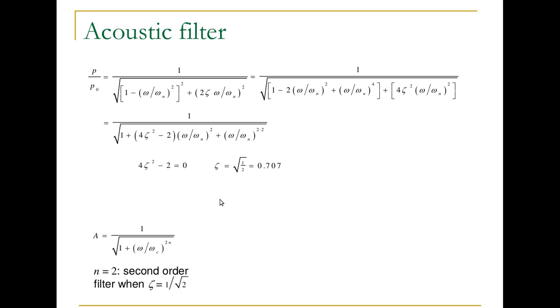And if we were to have values of zeta less than that, so lighter damping than 0.7, we would have this term minus this term, so it would act like a less than second-order filter. So that means that the attenuation would be less than 12 dB per octave after the cutoff frequency.